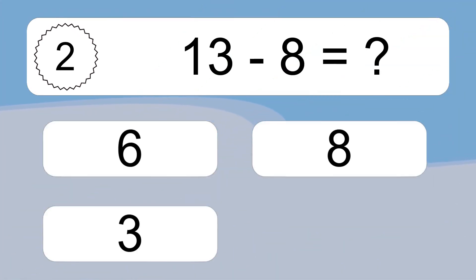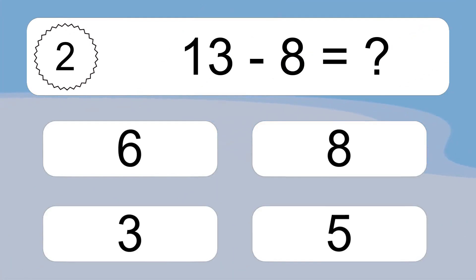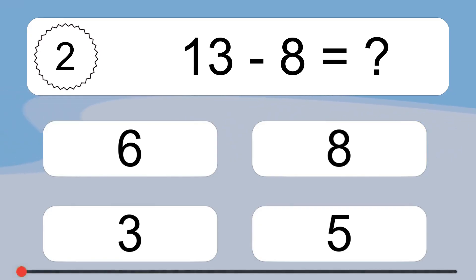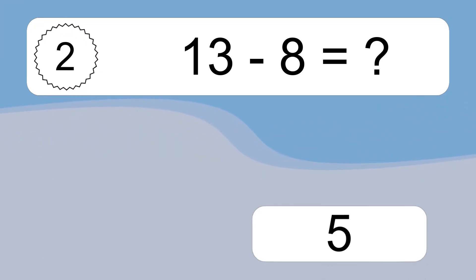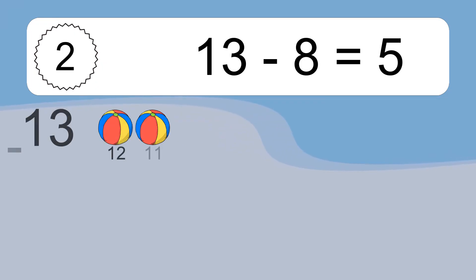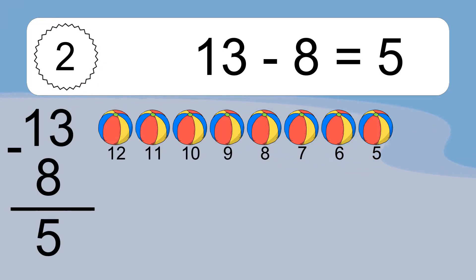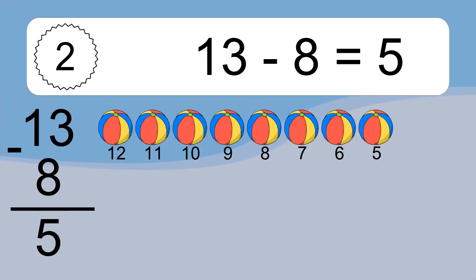13 minus 8 equals what? 13 minus 8 equals 5. Let's count it. 12, 11, 10, 9, 8, 7, 6, 5.